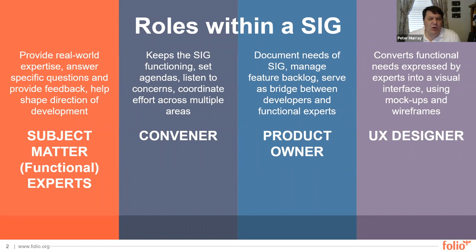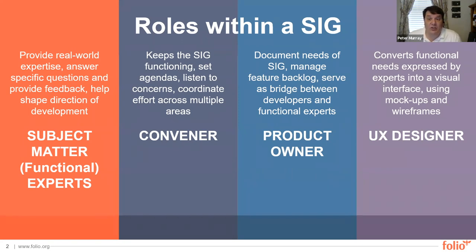SMEs and conveners almost always have just a part-time role in the Folio project, just a few hours a week. The other participants — the product owners and the user experience designers — tend to be more full-time or at least half-time on the Folio project. As a bridge between the SMEs and the software developers, the product owners translate the user stories and the prototype sketches into actionable work for the developers.